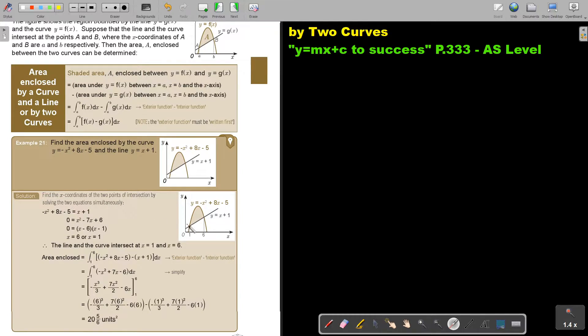So if I substitute the one into the other one, I factorize, I get 6 and 1. So basically, this is the 1 and this is the 6. Then the line and the curve intersects at 1 and 6. The area will then be 6 and 1 and it's first the curve minus the straight line.